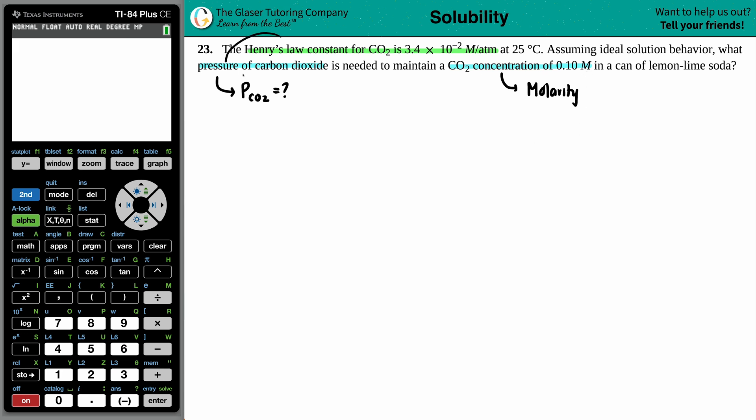So especially if they're giving you a Henry's Law constant, we will use the Henry's Law formula, which is this right here. CG equals K times PG. Pretty simple, right?